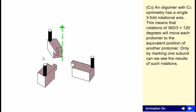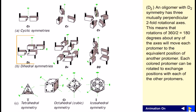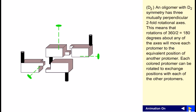Now an oligomer with D2 symmetry has three mutually perpendicular twofold axes of symmetry, as you can see. It's a twofold axis, and that means rotation of 360 divided by two, which means 180 degrees about any of the axes will move each protomer to the equivalent position of another protomer.